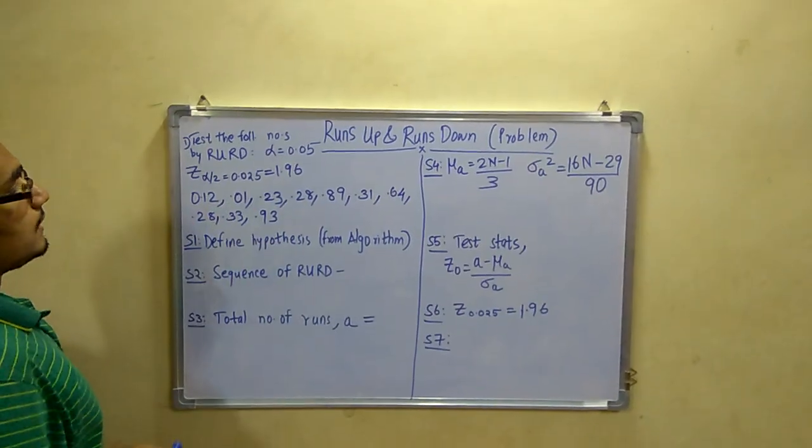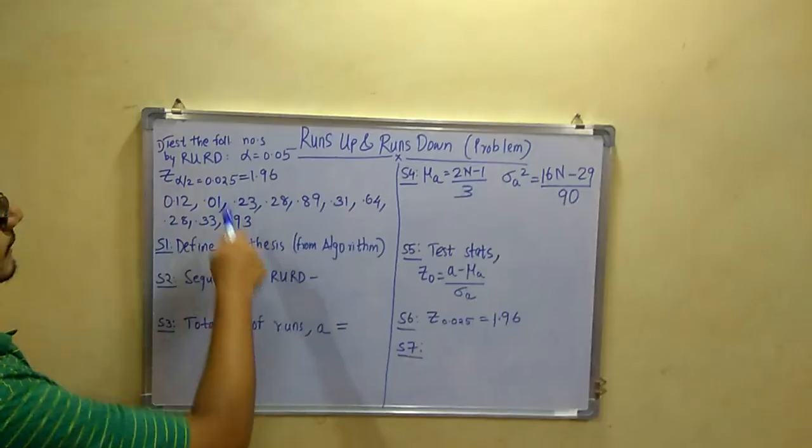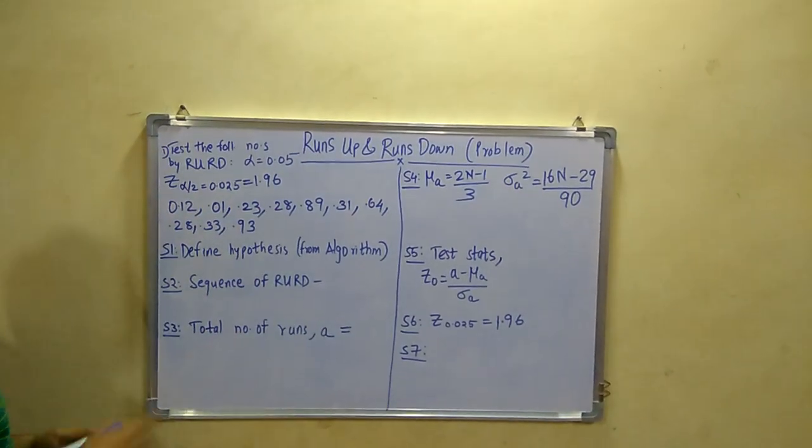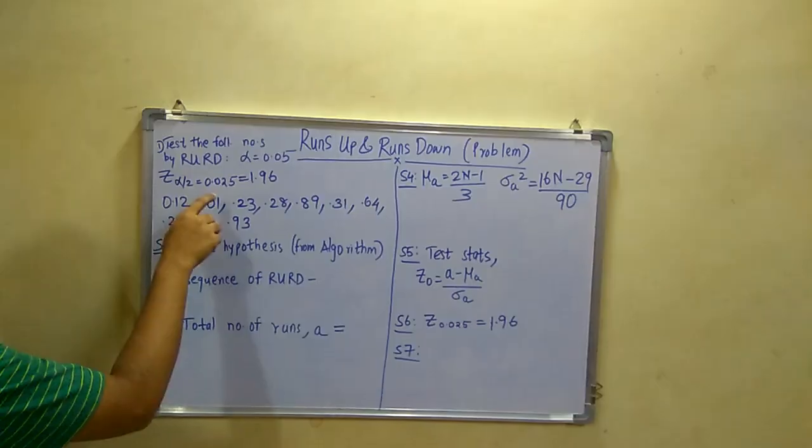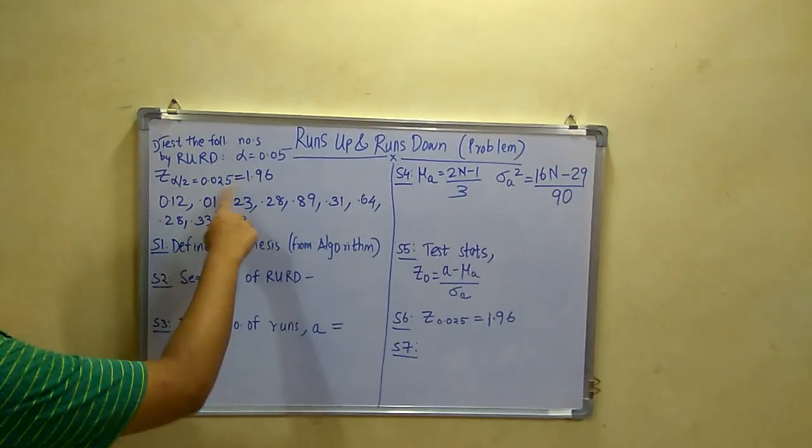The problem says that following sequence of numbers are given. You have to use the Runs Up Runs Down with alpha as 0.05, and they have also given that z alpha by 2 of 0.025 is 1.96.